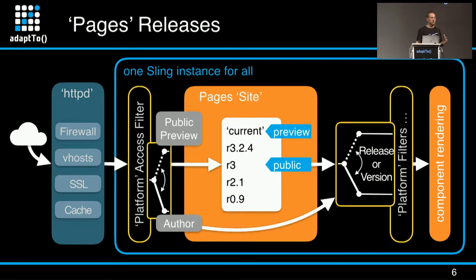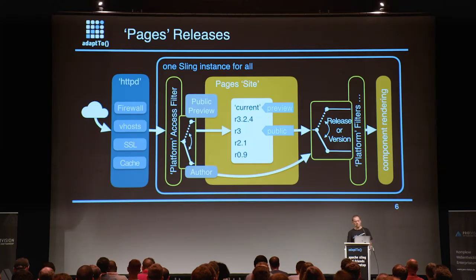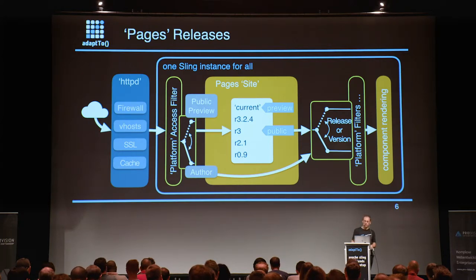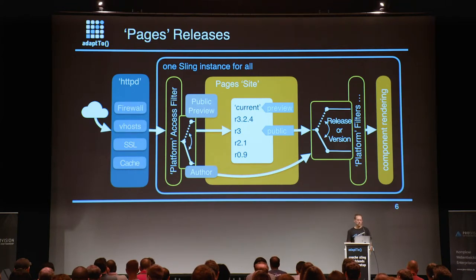What does the Pages module do in this filter chain? The Pages module is placed second in the filter chain. It analyzes the request, determines the site to deliver content from, and looks in the release table of that site to determine the requested release. With both pieces of information, the Platform filter in the next step can create its staging resource resolver. Finally, the components of the Pages module handle the rendering.